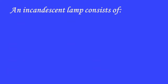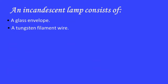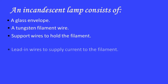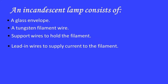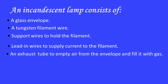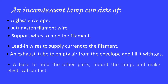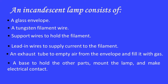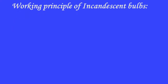An incandescent lamp consists of the glass envelope, the tungsten filament, wire support to hold the filament, lead-in wires to supply current to the filament, an exhaust tube to empty air from the envelope and fill it with gas, and the base to hold all parts, mount the lamp, and make electrical contact.